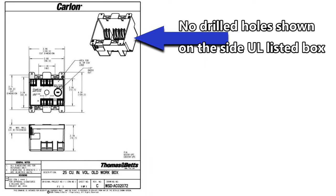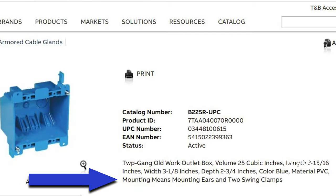This particular box is UL listed. And then when we go to the Carlon website and you look up the drawing, the UL listed drawing, we find that there are no drilled holes in the side of this non-metallic box. And then under specifications for this box, right where that blue arrow is, it says mounting means mounting ears and two swing clamps and that's all it says.